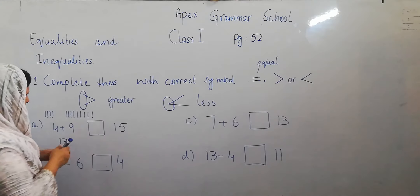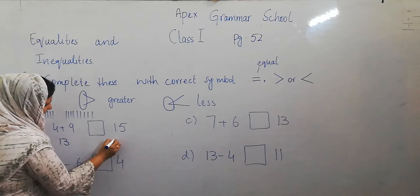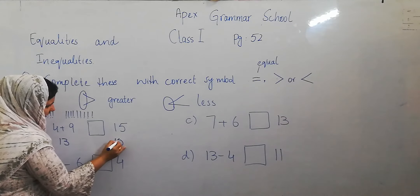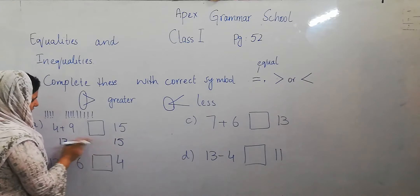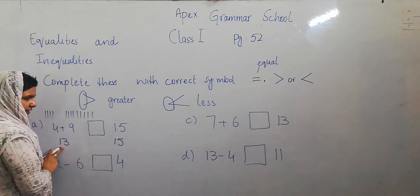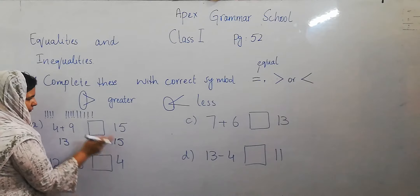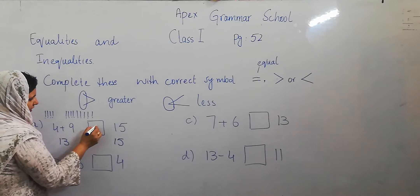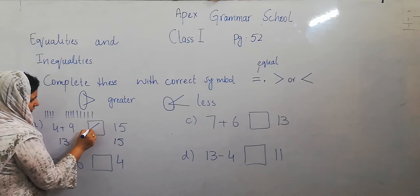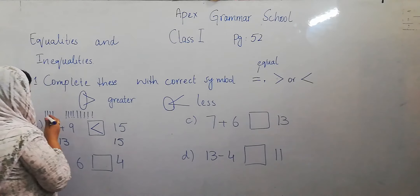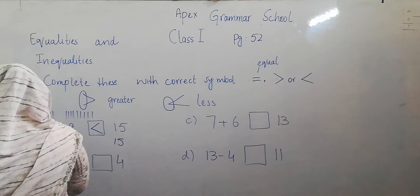13 and this is 15. Which is the greater number, which is less? 13 is less than 15. So we write the less than sign.